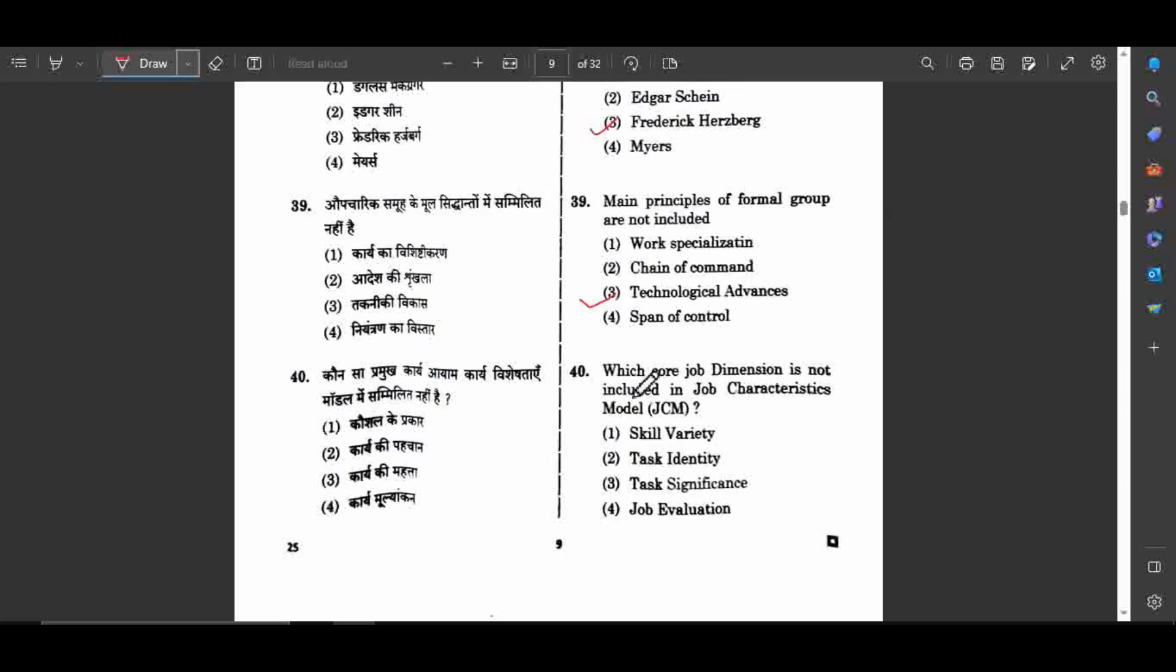Question number 40: Which job dimension is not included in the job characteristics model? This model was given by Richard Hackman and Greg Oldham. The dimensions included are skill variety, task identity, task significance, and besides these two more: autonomy and feedback. The right answer is job evaluation.